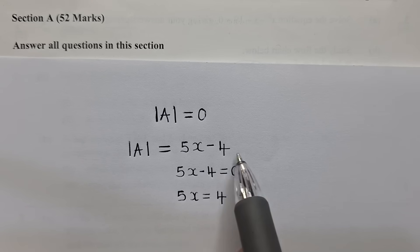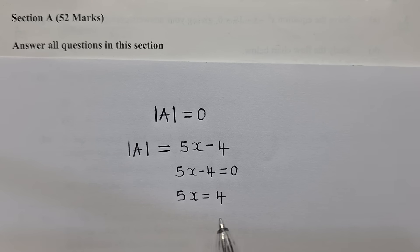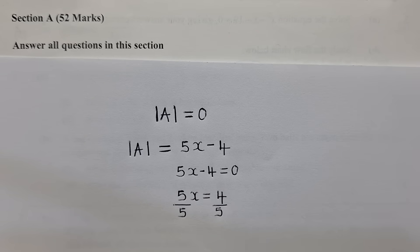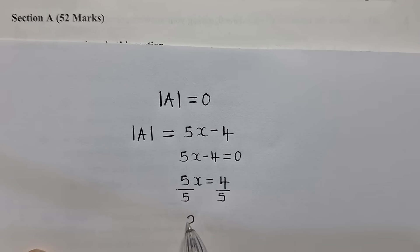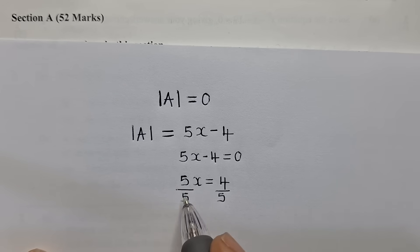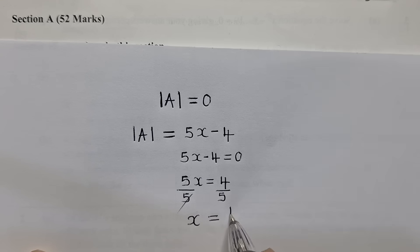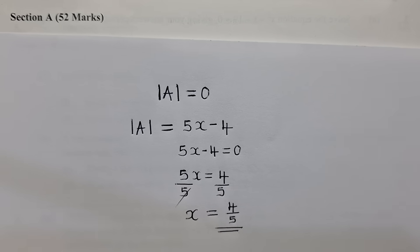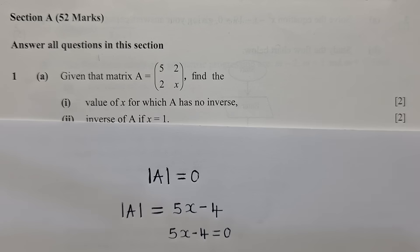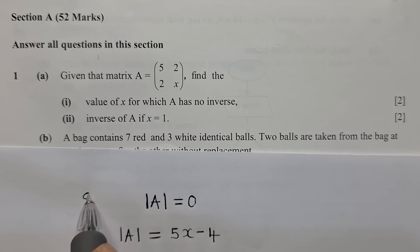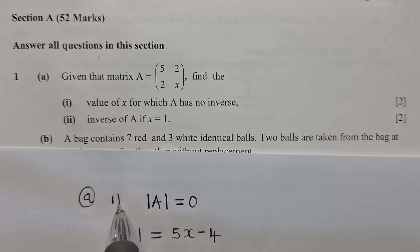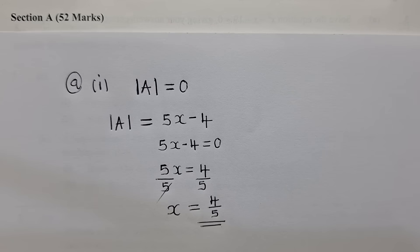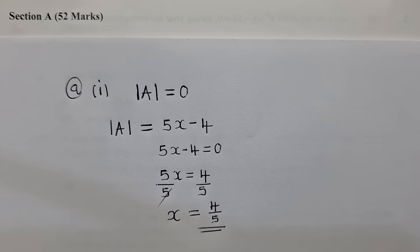From here, we group the like terms, so it will be 5x is equal to 4. So this minus 4 will cross the equal sign, it will be plus 4. You divide by 5, meaning the value of x, or the solution for question A1, is equal to 4 over 5.